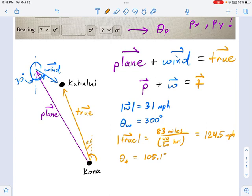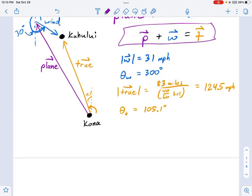Using this equation up here, let's go ahead and start forming some new equations. I'm going to say Px plus Wx equals Tx. Let's use what we know. Wx is the x component of the W vector. That's 31 cosine 300 degrees, and that's going to be equal to the x component of the T vector. That was 124.5 times the cosine of 105.1 degrees.